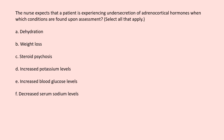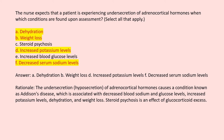The nurse expects that a patient is experiencing under-secretion of adrenocortical hormones when which conditions are found upon assessment? Select all that apply. A. Dehydration. B. Weight loss. C. Steroid psychosis. D. Increased potassium levels. E. Increased blood glucose levels. F. Decreased serum sodium levels. Rationale: The under-secretion (hyposecretion) of adrenocortical hormones causes Addison's disease, which is associated with decreased blood sodium and glucose levels, increased potassium levels, dehydration, and weight loss. Steroid psychosis is an effect of glucocorticoid excess.